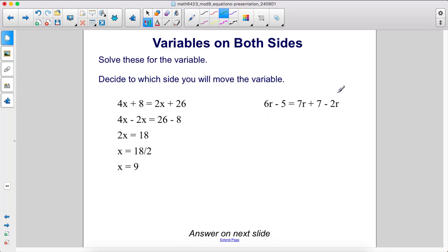Here we actually have two like terms, so let's first combine them. We have 6r minus 5. 7r minus 2r is 5r plus 7.